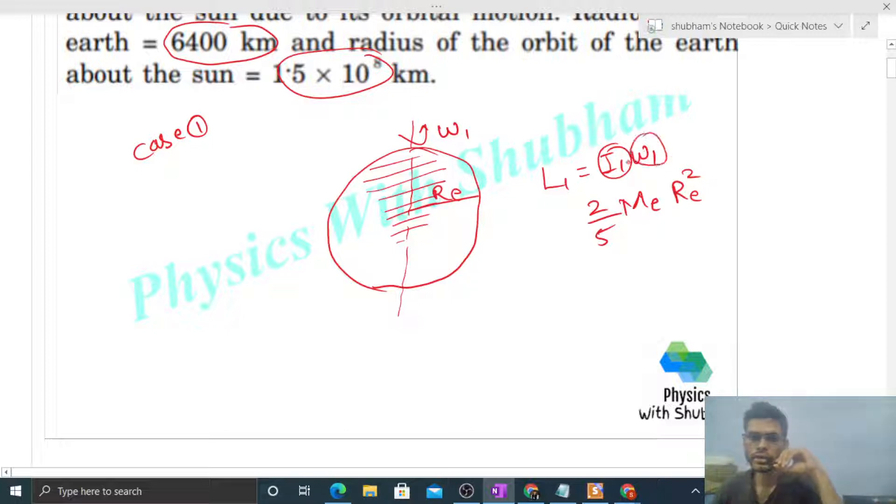And what is omega 1? Omega 1 is the angular velocity. Omega 1 will be simply 2π upon T1. In how much time 2π angle is covered, that is your omega 1. We know the value of T1, that is 24 hours or you can take it to be one day. Earth rotates completely about its axis in one day. One rotation is completed in one day. So therefore we can write omega 1 as 2π upon T1.